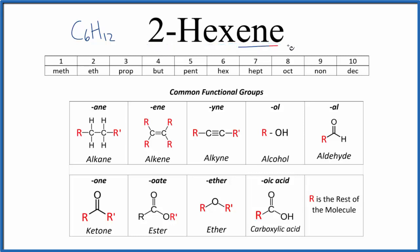When you see 'ene' on the end, you know that you have an alkene. Alkenes have a double bond between two carbons. The 'hex' means six, so we'll have six carbons in a chain with a double bond, and that double bond is going to be on the second carbon.